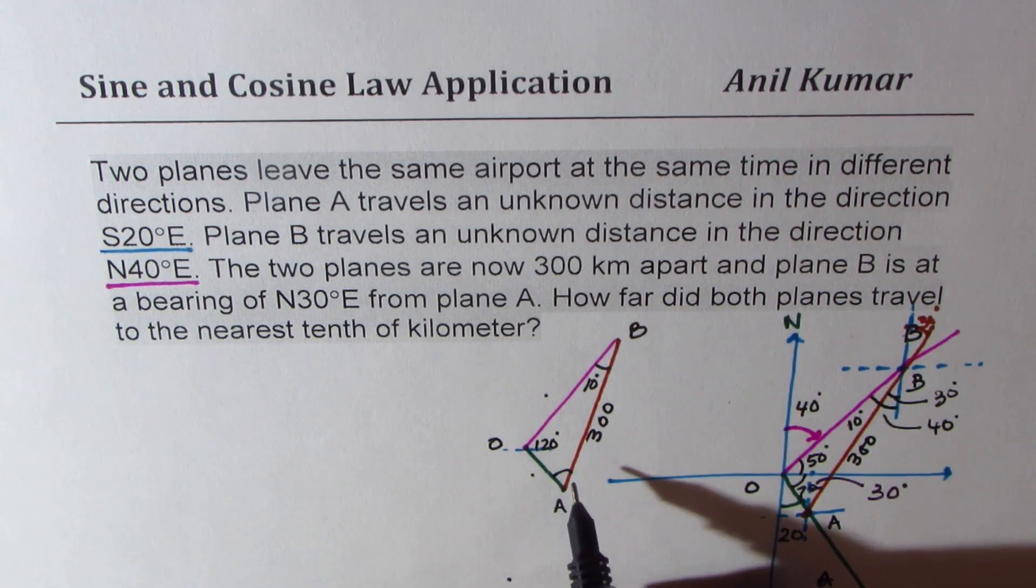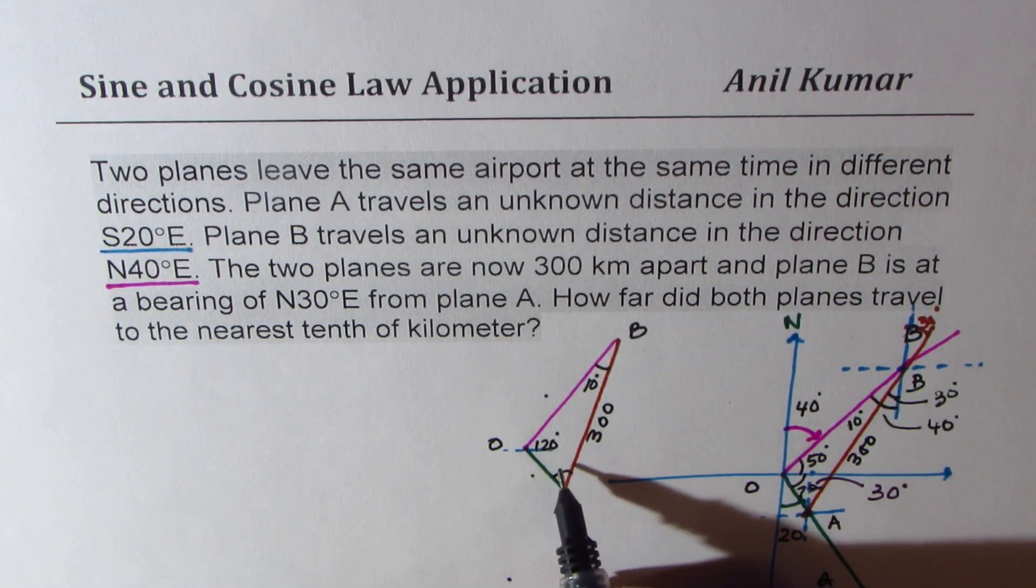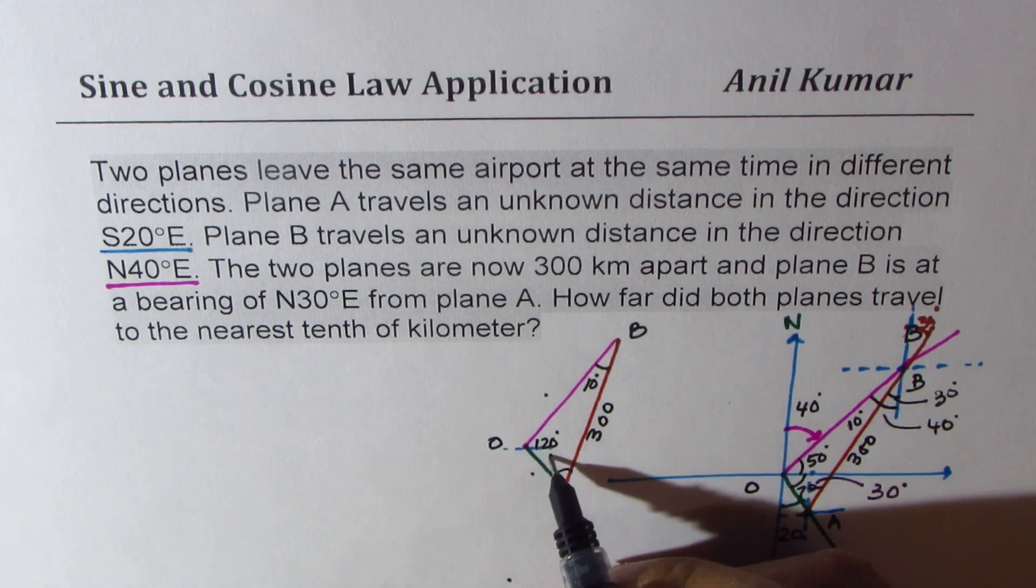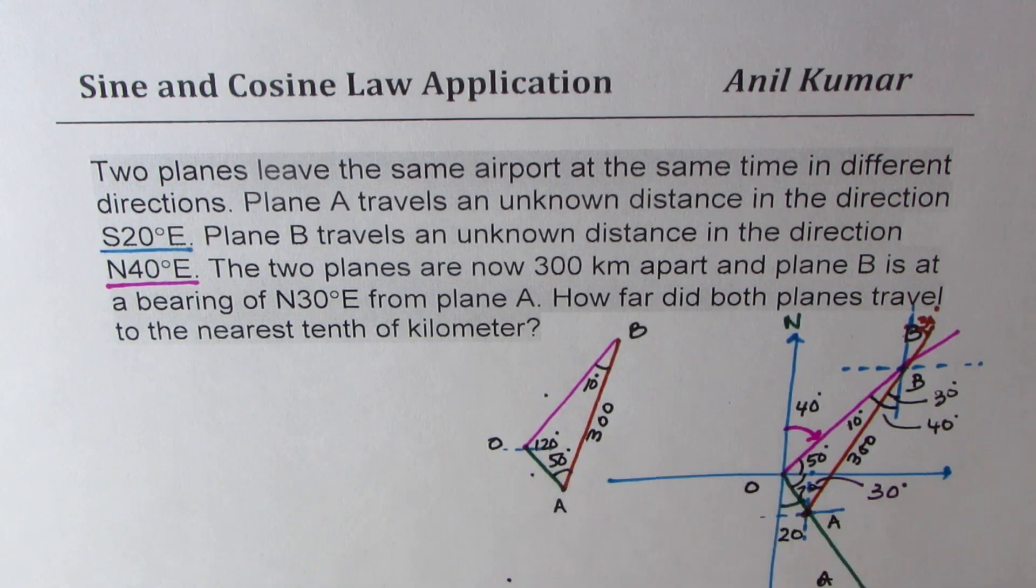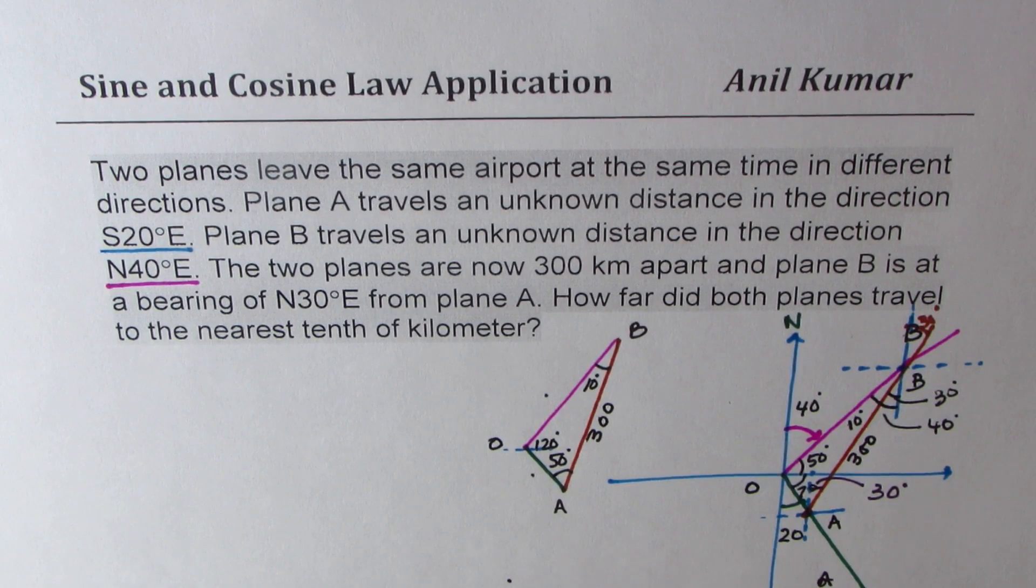The angle here should be how much? 130 minus, take away from 180, we get 50. So that makes 180 degrees for the whole triangle. Now it is simpler.